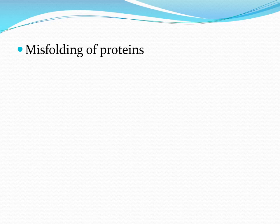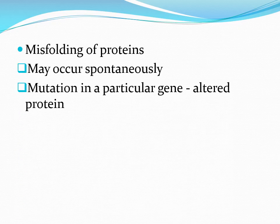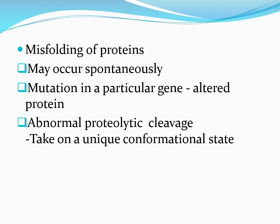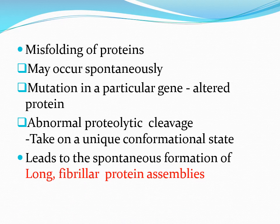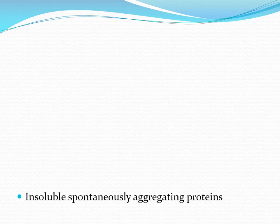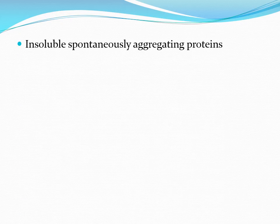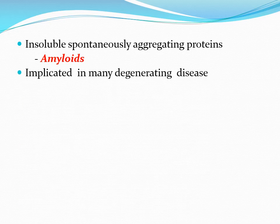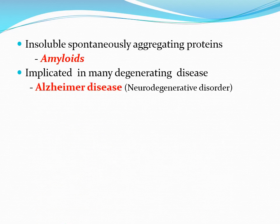Misfolding of proteins may occur spontaneously or be caused by a mutation in a particular gene, which then produces an altered protein. In addition, some apparently normal proteins can, after abnormal proteolytic cleavage, take on a unique conformational state that leads to the spontaneous formation of long fibrillar protein assemblies consisting of beta-pleated sheets. These insoluble fibrous protein aggregates are called amyloids. These amyloids may be implicated in neurodegenerative disorders such as Parkinson's disease and Alzheimer's disease.